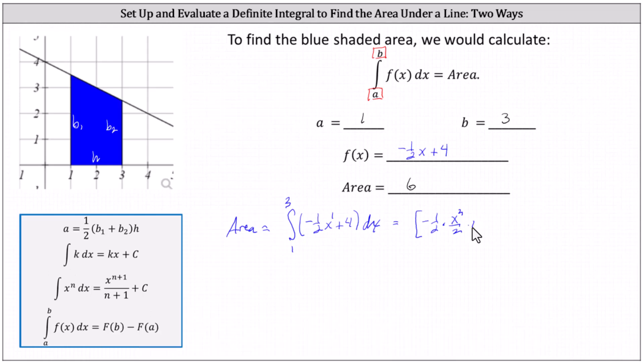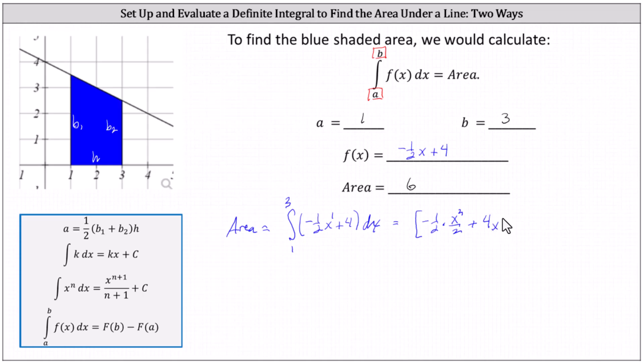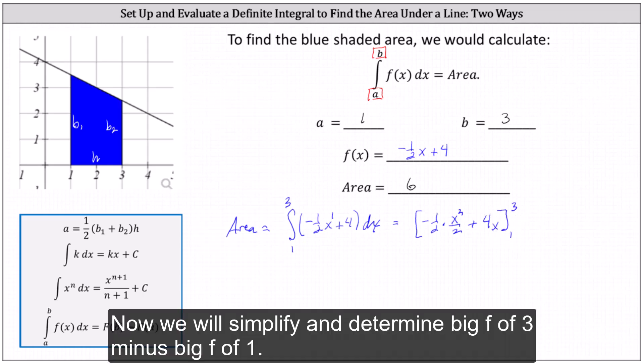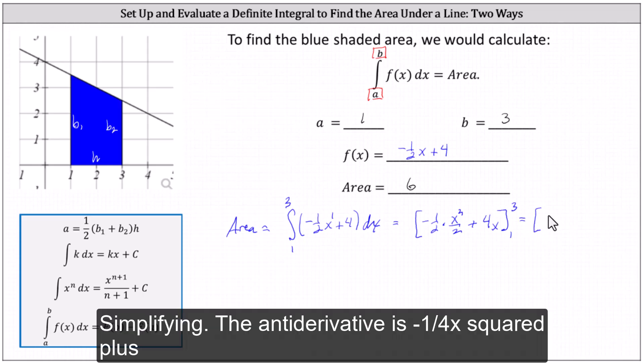And then we have plus the antiderivative of four with respect to x, which is simply four times x. Now we will simplify, then determine big F of three minus big F of one. Simplifying, the antiderivative is negative one-fourth x squared plus four x.